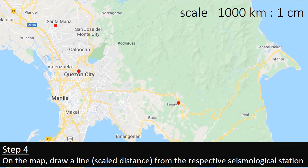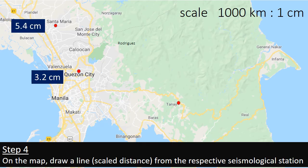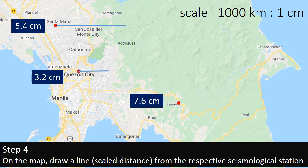Remember that we are working with step number 4. On the map, we draw a line from each respective seismological station representing the scaled distance: 3.2 centimeters from Quezon City, 5.4 centimeters from Santa Maria, and 7.6 centimeters from Tanay Seismological Station. You just draw a line across the map using a ruler.